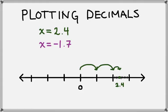Now let's look at x equals negative 1.7. We have one whole number, and we're going to the left, so we'll go over by 1. And then we need to split that last piece into tenths. And then we're going to go over 7 of those for the .7. And that gives us negative 1.7.